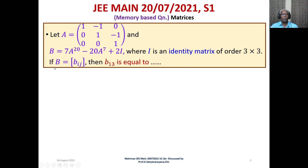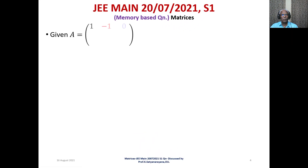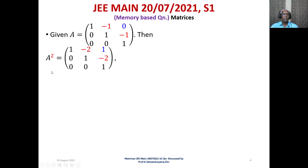The question asks: if B = [b_ij], then what is b₁₃, the element in the first row and third column of capital B? Given A is the 3×3 matrix with first row [1, -1, 0], second row [0, 1, -1], third row [0, 0, 1], we need to compute powers of A.